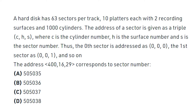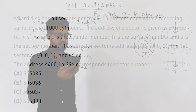A hard disk has 63 sectors per track, 10 platters each with two recording surfaces, and 1000 cylinders. The address of a sector is given as a triple CHS, where C is the cylinder number, H is the surface number, and S is the sector number. Thus the 0th sector is addressed as 0,0,0.